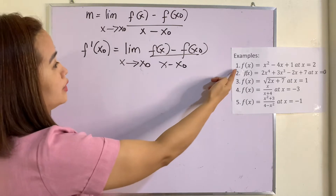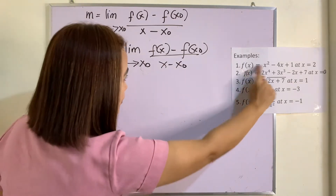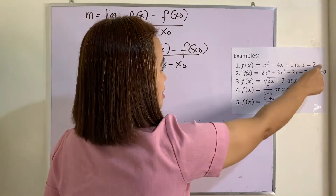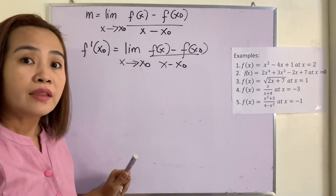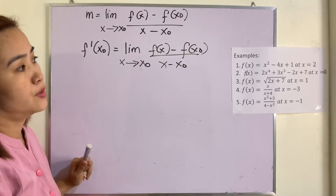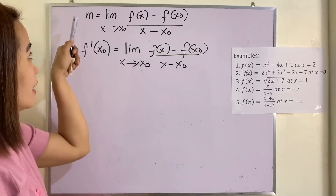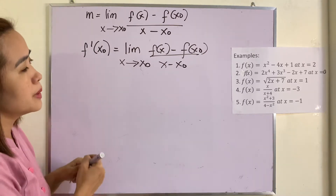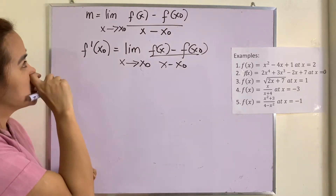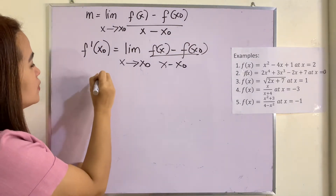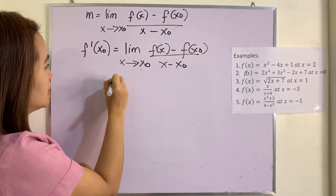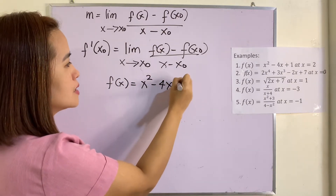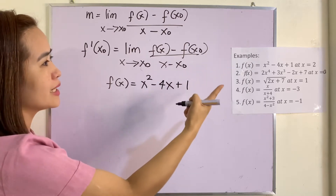If we will evaluate this, as you can see, we have a function and a point. This one is the x₀. We can find F(x₀) from there, and then we get M — the slope — or we get the derivative. They are the same. So, I will be using this one. F(x) is equal to x squared minus 4x plus 1, at x equal to 2.